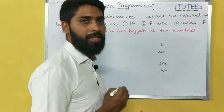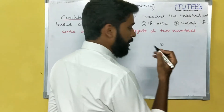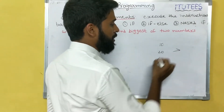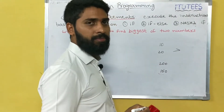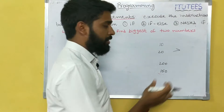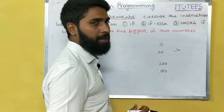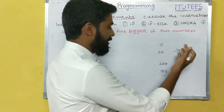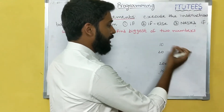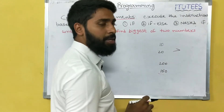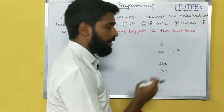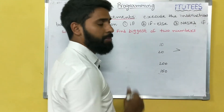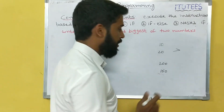How we can determine that? In our mind, we are applying the greater than symbol — it is a comparison operator. You are comparing two variables. If the first is greater than the second, then the first number is big. If it is false, then the second number is big.